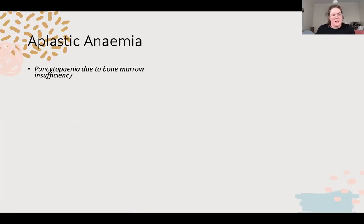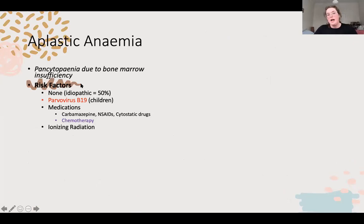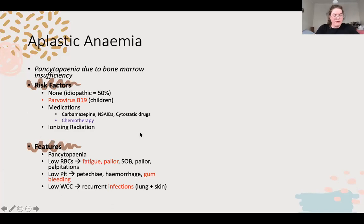It's a pancytopenia, but because the bone marrow isn't working rather than a leukemia - which is pancytopenia because it's making something else. Main causes: usually idiopathic. Parvovirus B19 causes aplastic anaemia in children, and chemotherapy - anything that kills highly proliferative cells will also affect bone marrow, along with ionising radiation. Features: pancytopenia - features of low red blood cells (anaemia), low platelets (all sorts of bleeding), and low white cells (infections). These are the main questions to ask in any heme station.